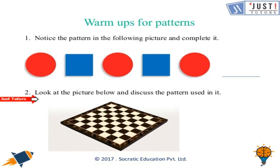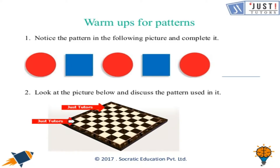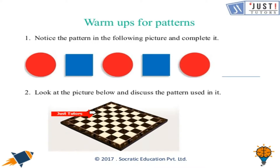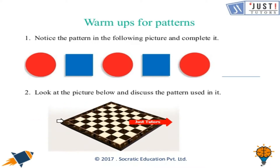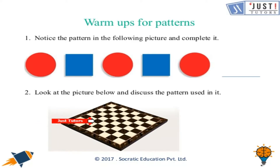Question two: look at the picture below and discuss the pattern. Moving along the line, it alternates black square, white square, black square, white square, and so on. Moving diagonally, you get one black square, then two white squares, then three black squares, then four white squares, then five black squares — and after that it starts reducing.